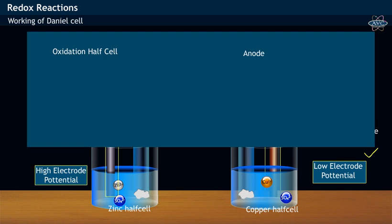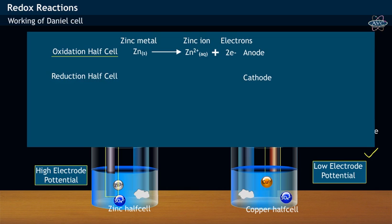At the oxidation half cell, the zinc metal oxidizes to zinc ion by losing two electrons, while the cupric ion reduces to copper by accepting two electrons at reduction half cell.